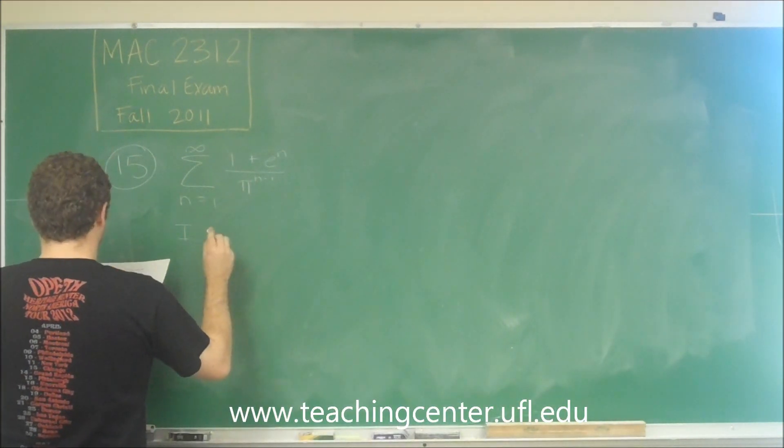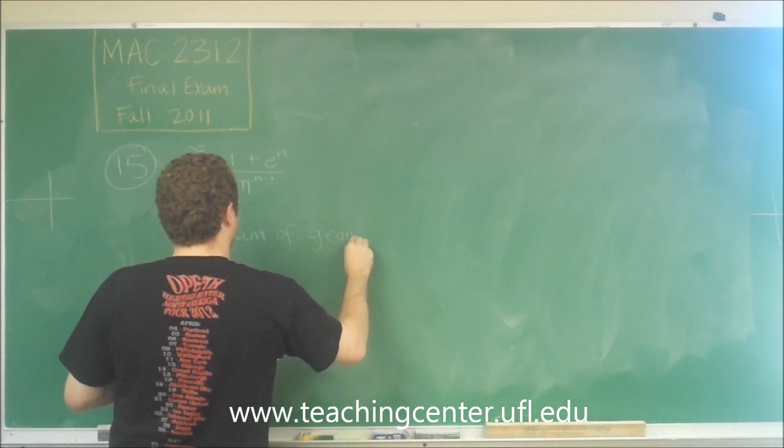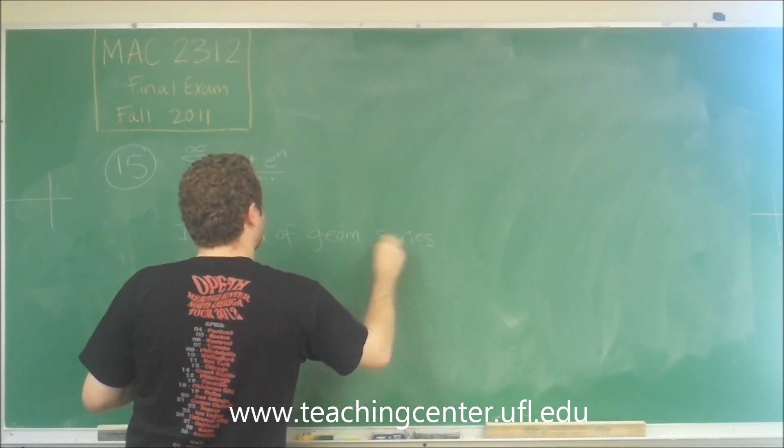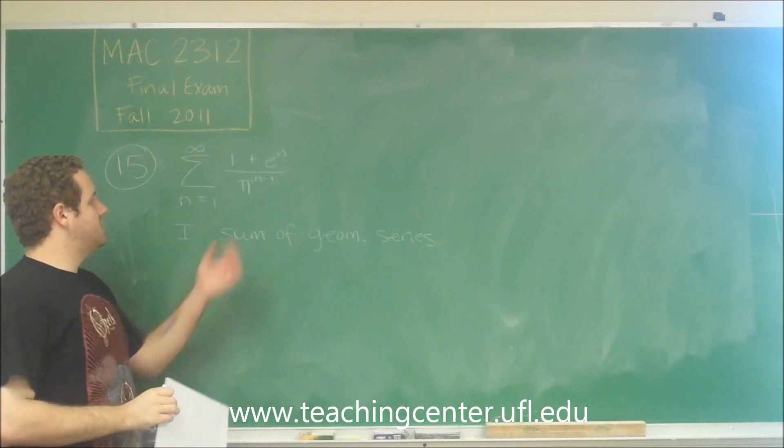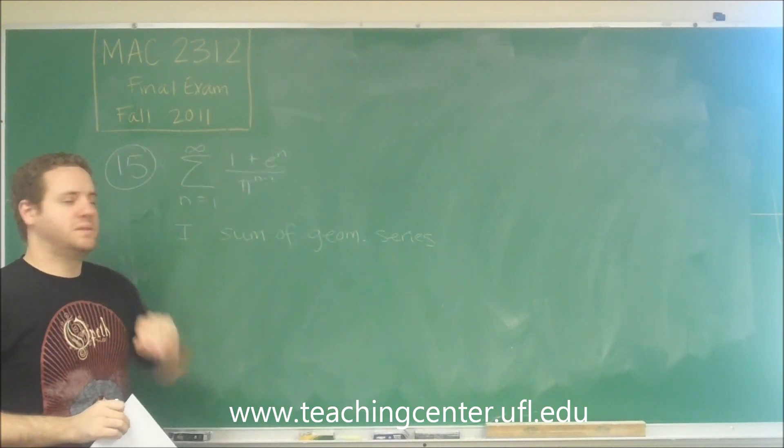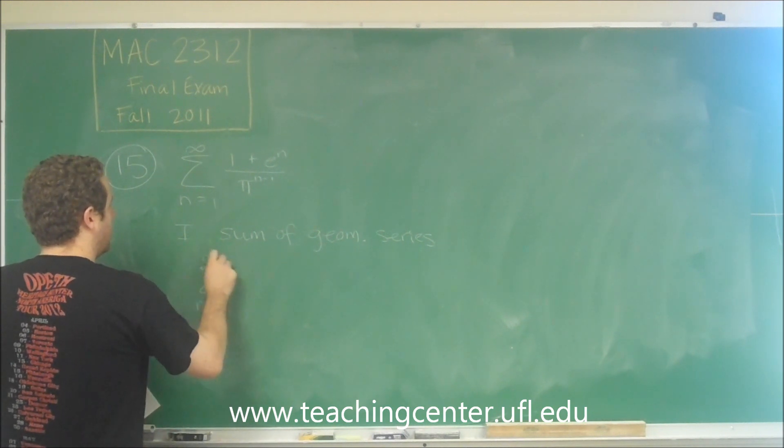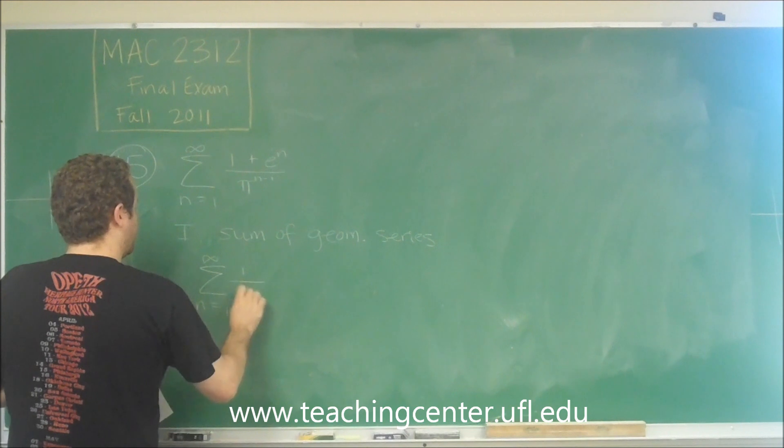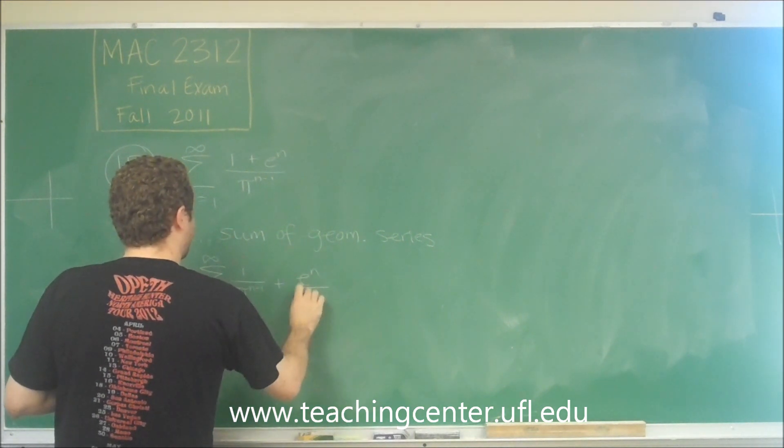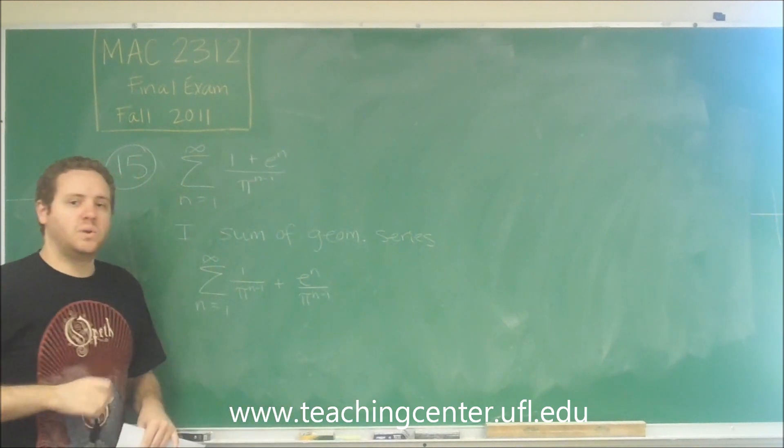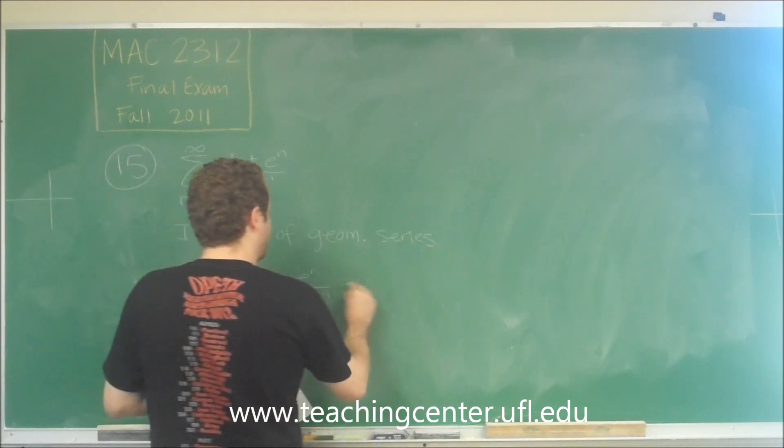So the first one is that it is a sum of geometric series. So we need to see if this is true or false. Well what you can do here is since we have a single term in the denominator, you can split these up. So we could have this as 1 over pi to the n minus 1 plus e to the n over pi to the n minus 1. And we could get those into their geometric forms in the following way.